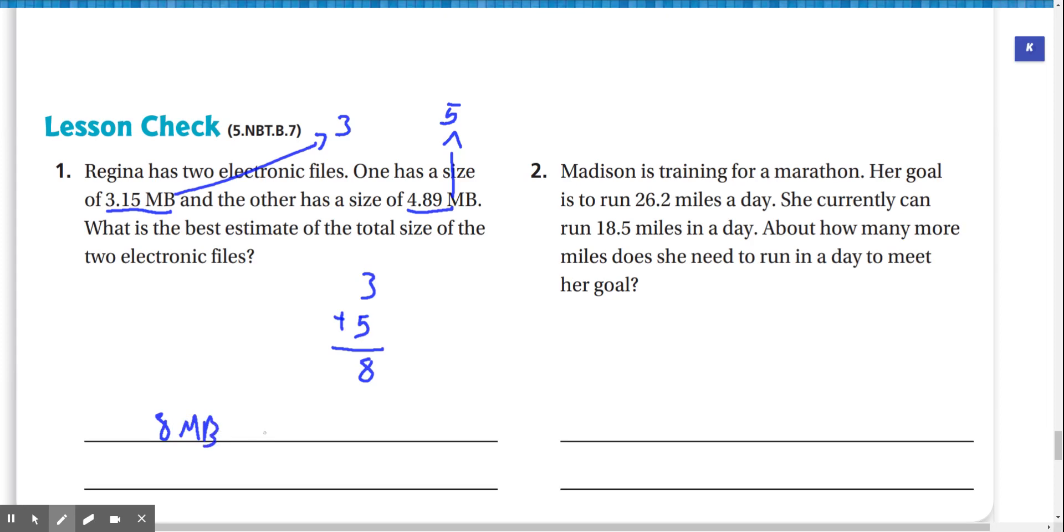Number two, Madison is training for a marathon. Her goal is to run 26.2 miles a day. She currently can run 18.5 miles in a day. About how many more miles does she need to run in a day to meet her goal? Well, 26.2 rounds to 26, and 18.5 rounds to about 19. So we subtract those. We can't subtract 6 from 9, so we regroup the 2, turn it into 1. Then this becomes 16. 16 minus 9 is 7, and 1 minus 1 is 0. So she needs to run about 7 more miles to meet her goal.